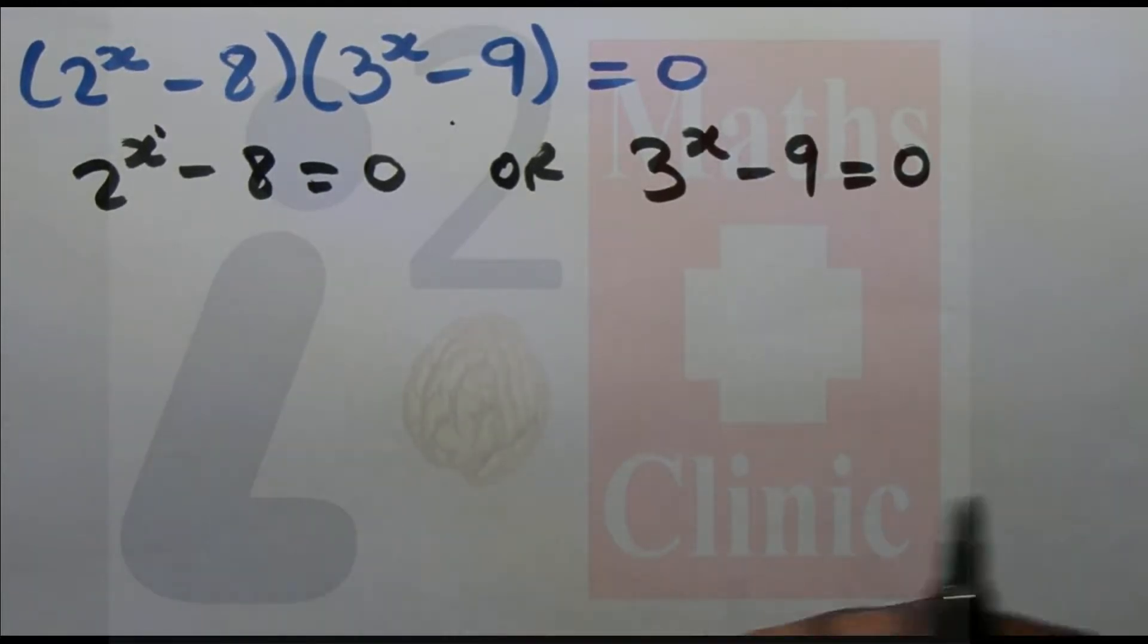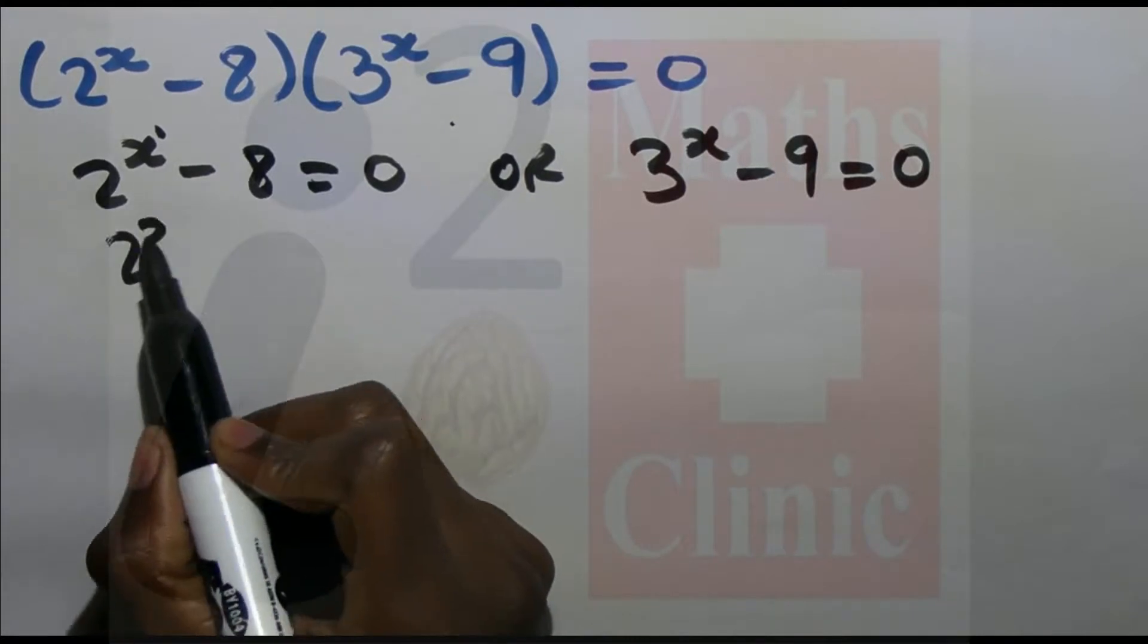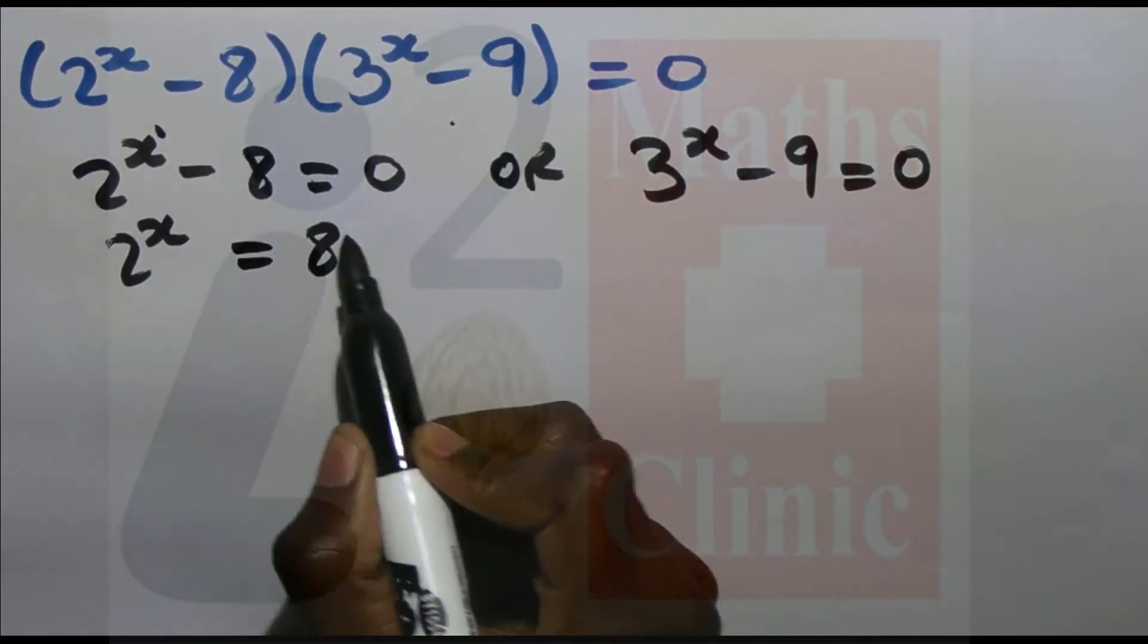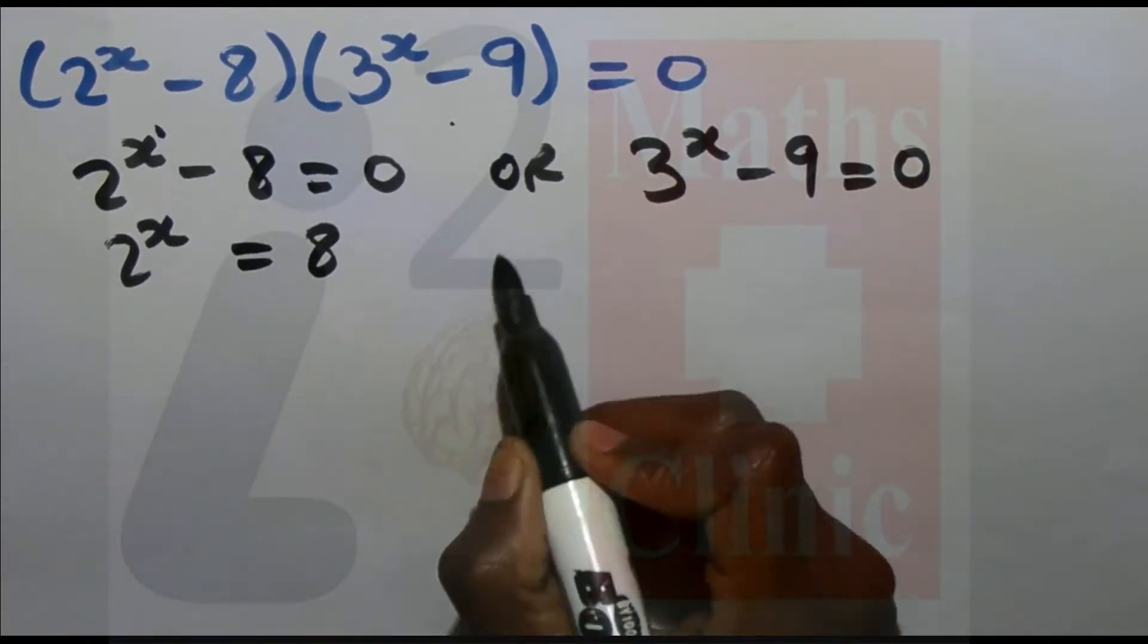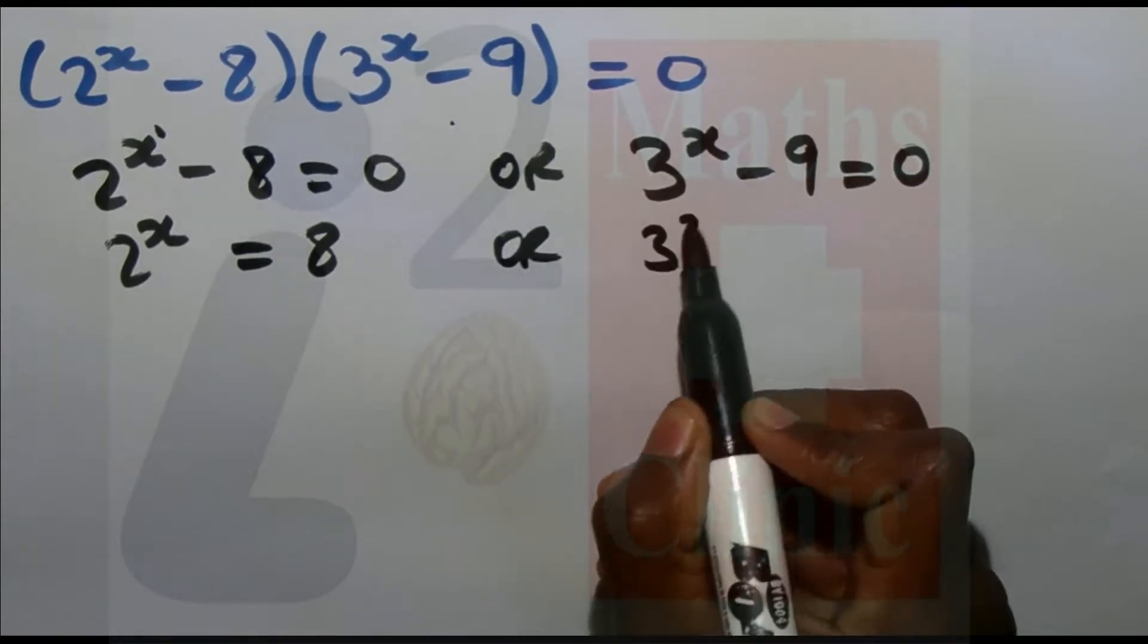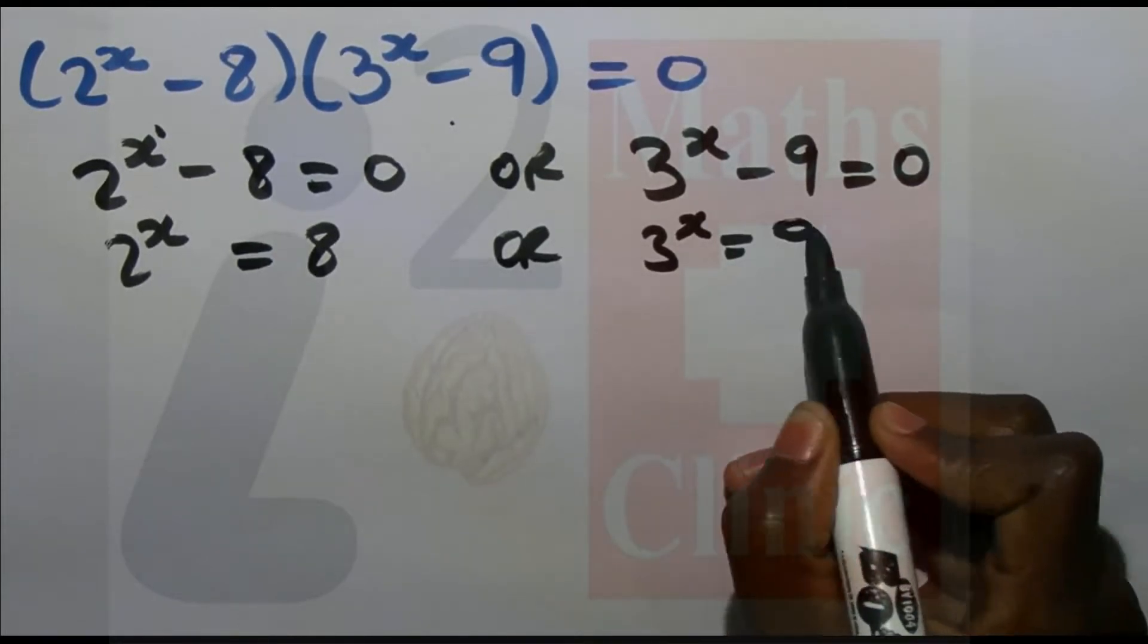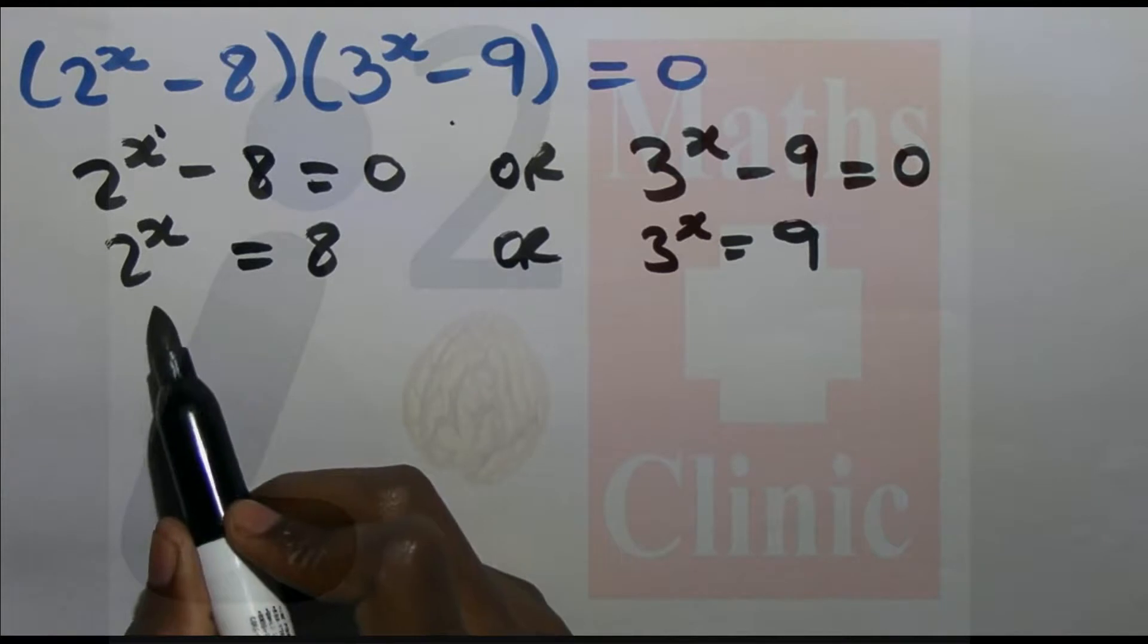Solving the first equation: 2^x - 8 = 0, so 2^x = 8. For the second equation: 3^x - 9 = 0, so 3^x = 9.